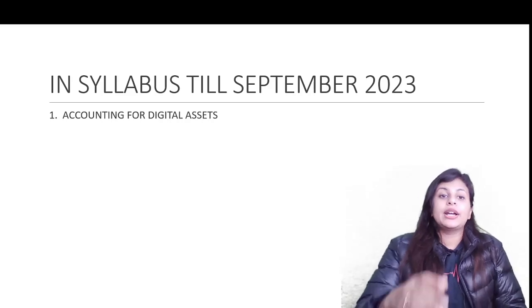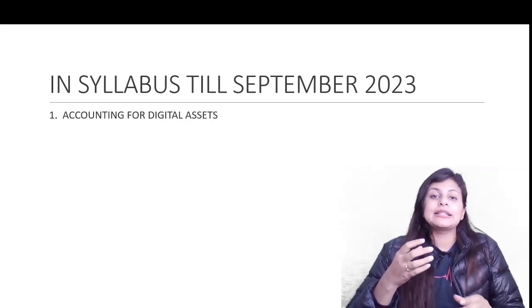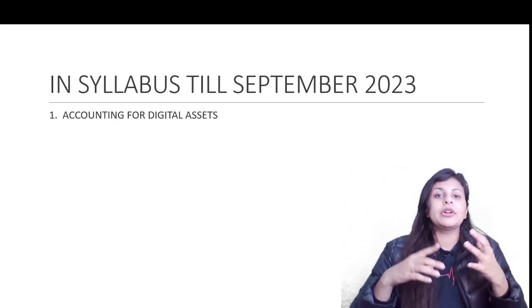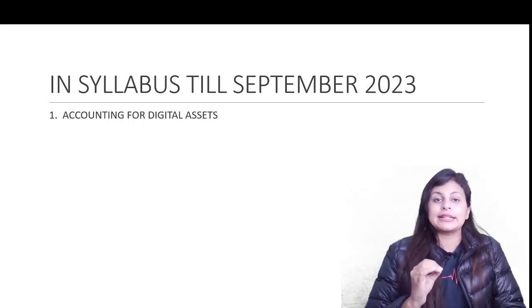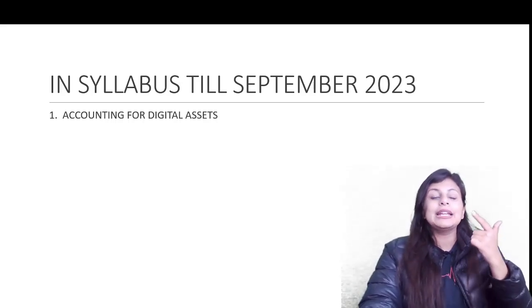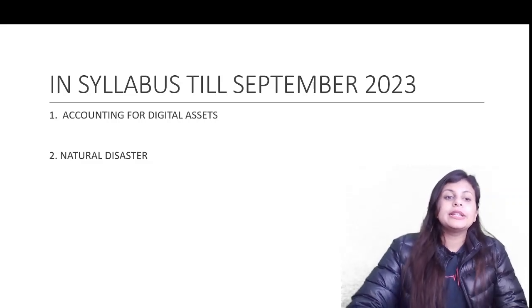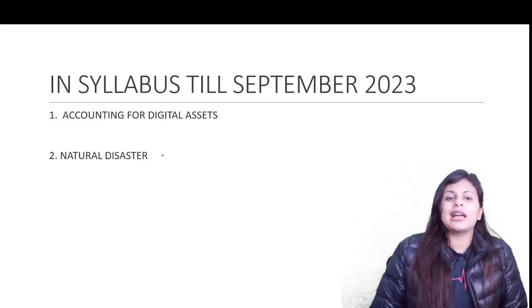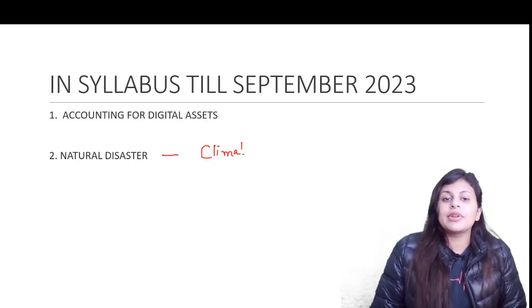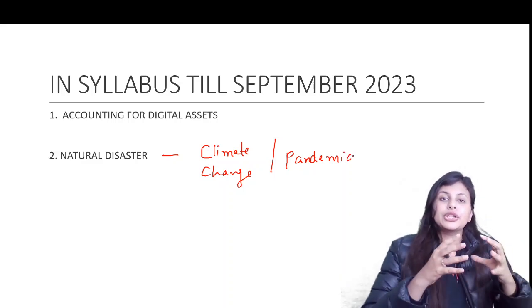The first current issue in your syllabus is accounting for digital assets — assets which exist in electronic form, not a laptop or machinery or building, but digital or electronic assets. We will be talking about cryptocurrency and initial coin offerings under this heading. Then we have natural disaster, where we discuss the pandemic as well as climate change. Some study materials call it a current issue for climate change, others call it the current issue for the pandemic — they are one and the same thing.